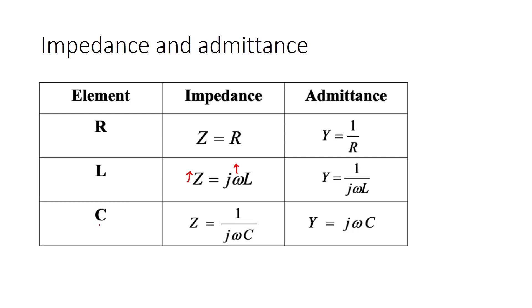And what about the capacitor? The capacitor, the impedance is 1 over jωC. It means that if we increase the frequency, the impedance will decrease. And the admittance is jωC. So it's opposite of, it's inverse of the actually impedance here.